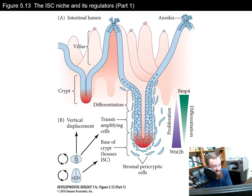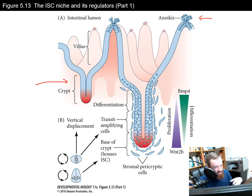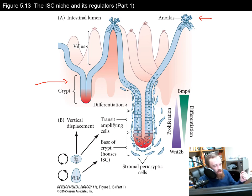Now we're going to look at intestinal stem cells and their regulation. The intestinal epithelium is composed of long finger-like villi that project into the lumen of the intestine, and at the base are deep pits called crypts. The stem cells reside at the very bottom of the crypts, and cell death occurs at the top via anoikis — where cells get shed off into the lumen. Turnover of these cells within the intestinal lumen happens every two to three days, making them pretty short-lived cells.